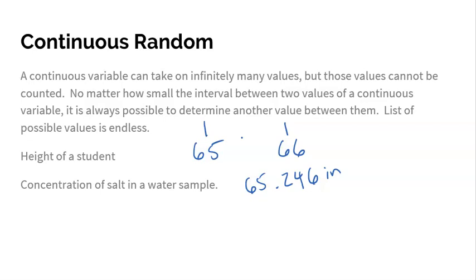Another example is the concentration of salt in a water sample. How many milligrams of salt per liter could range anywhere from, say, one to fifteen milligrams per liter, and there are literally infinite options in between — not just whole numbers like 1, 2, 3, but decimals with three, four, or five decimal places. So if data is whole numbers that were counted, it's discrete. If numbers were measured and can take on any value, that's continuous.